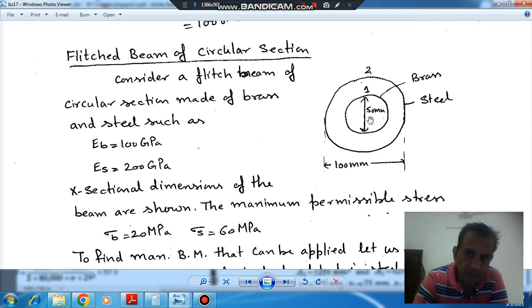Suppose we have a composite beam. Inner portion is made of brass and outer portion is made of steel. Inner portion is of diameter 50 mm and outer portion is of outer diameter 100 mm, inner diameter 50 mm.